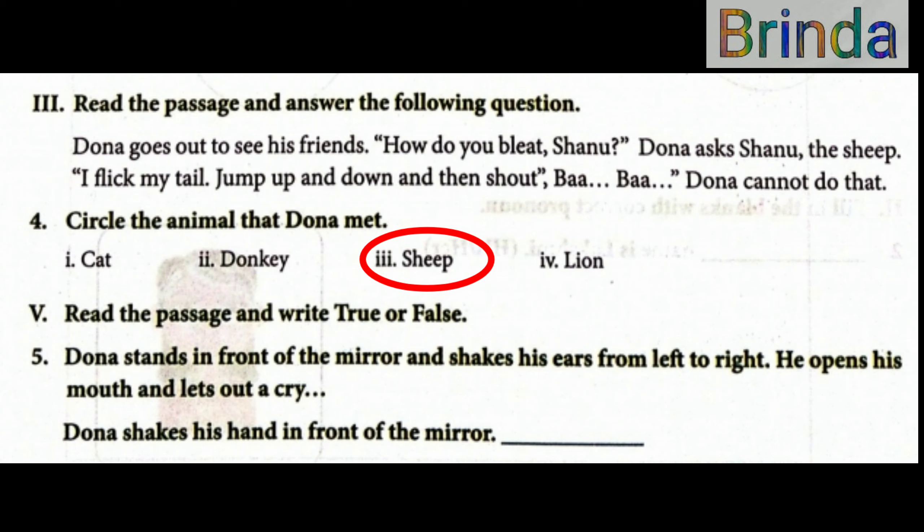Fourth question: circle the animal that Dona met. Dona — who meets the animal? The options are: cat, donkey, sheep, lion. So Dona — who meets the animal? Sheep. That's why you circle sheep as the animal Dona met.